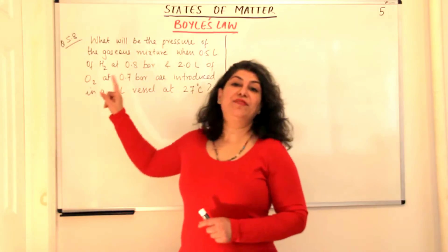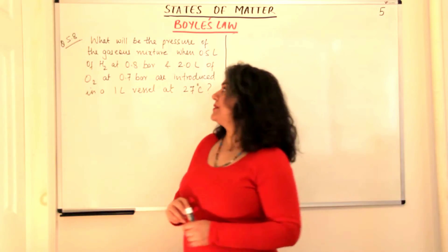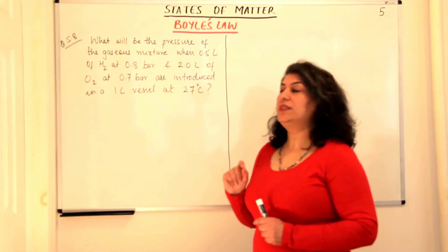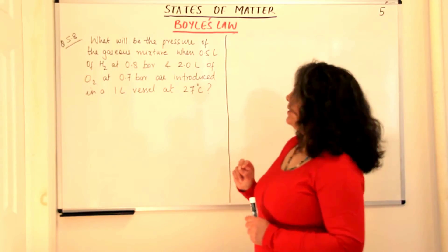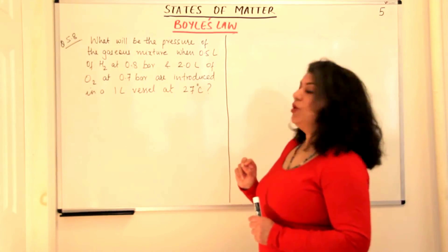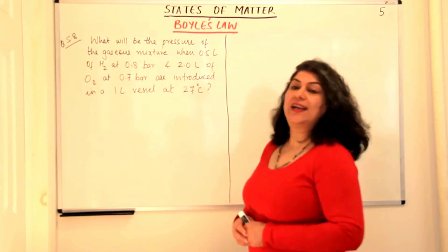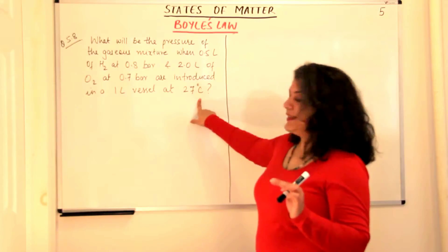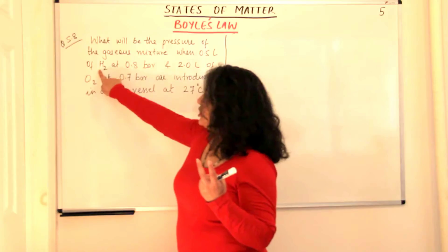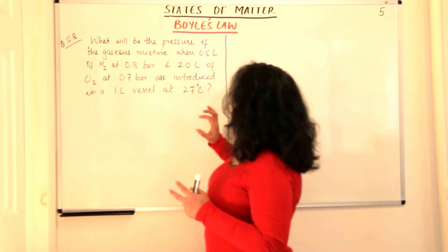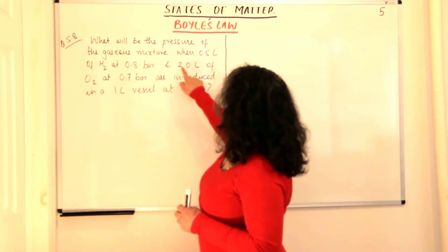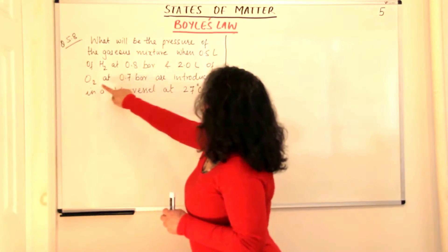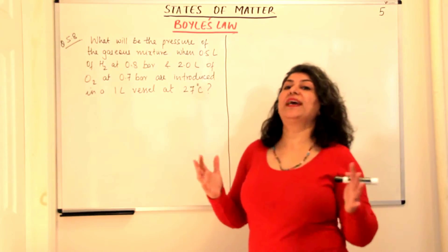Now this is question 5.8, the 8th question of chapter 5 of the NCRT textbook exercise. The question reads: what will be the pressure of the gaseous mixture when 0.5 litres of dihydrogen at 0.8 bar and 2 litres of dioxygen at 0.7 bar are introduced in a one litre vessel at 27 degrees Celsius? We see 27 degrees Celsius is the temperature, which is constant. But instead of one gas, we have two gases — hydrogen and oxygen.